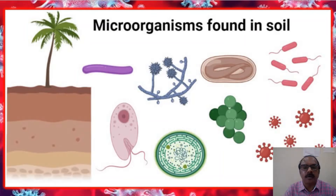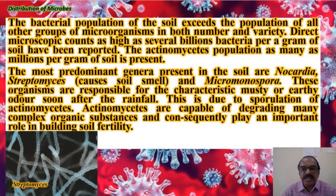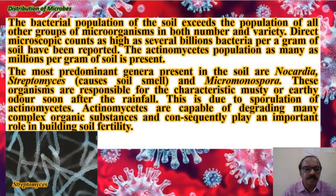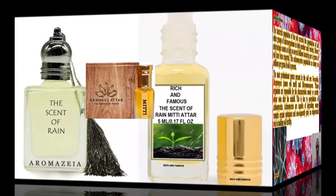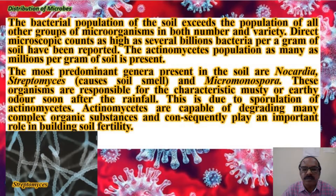The bacterial population in the soil exceeds the population of all other organisms. Direct microscopic count is as high as several billion bacteria per gram of soil. The population of actinomycetes is also very high in the soil. The most predominant genera found in the soil are Nocardia and Streptomyces. The characteristic pleasant smell of soil after the first rains that many people enjoy is because of Streptomyces.